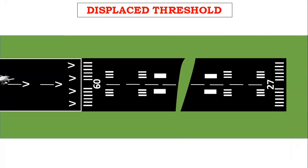Displaced threshold: a threshold is at the beginning of the runway. A threshold may be displaced either temporarily due to construction work or permanently. The portion of runway behind a displaced threshold is available for takeoff but the landing distance is reduced for that runway. A displaced threshold is marked by a stripe with an arrowhead along the centerline showing the displaced threshold, with arrowheads across the width of the runway just prior to the stripe in the case of a temporary displaced threshold. The stripe length is 30 meters and the gaps are 20 meters.